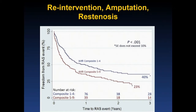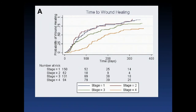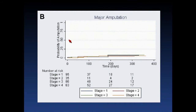A more recent publication looked at a multidisciplinary diabetic foot ulcer clinic and examined outcomes of wound healing and major amputation. There was some association between WIfI staging and time to wound healing — stage 4 had the longest time — but no association with risk of major amputation. Because this was a multidisciplinary limb salvage clinic, major amputation rates were very low, around 5 percent.